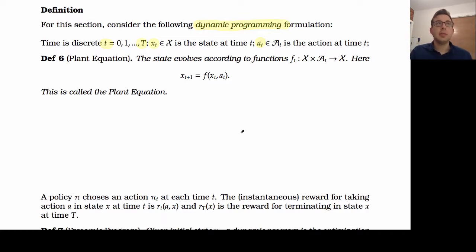Now, like before, what we find is once we've chosen an action from a given state, that determines where we're going to go next. So once I'm in a state and I decide an action, then that determines where I'm going to go next through some function f. This is called the plant equation.